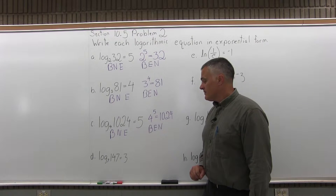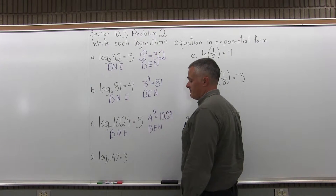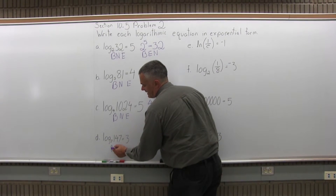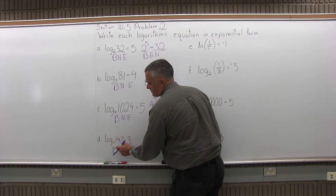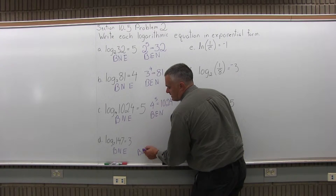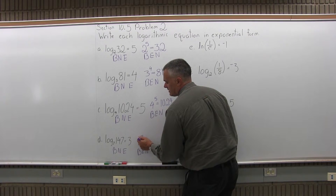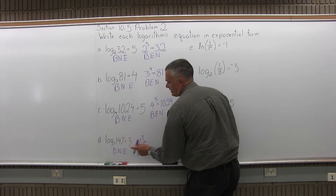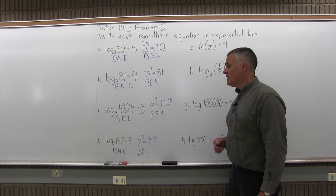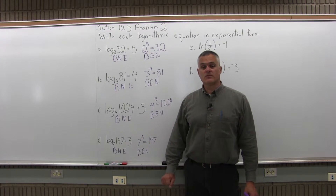Part D says write log base 7 of 147 equals 3 in its exponential form. Underneath log base 7 of 147 equals 3, I write Benny — base, number, exponent. The base is 7, the number is 147, and the exponent is 3. Writing BEN for the exponential form: base is 7, exponent is 3, then equals, then the number 147. So log base 7 of 147 equals 3 is equivalent to writing 7 to the third power equals 147.